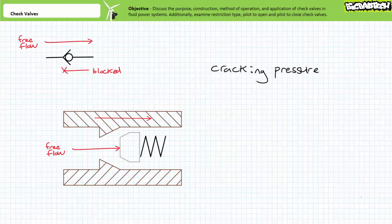Most check valves have extremely low cracking pressures on the order of 5 psi. At the full open pressure, the poppet fully unseats and allows unrestricted flow. The region between cracking pressure and full open pressure would see increasing flow in the free flow direction as the poppet progressively unseats.